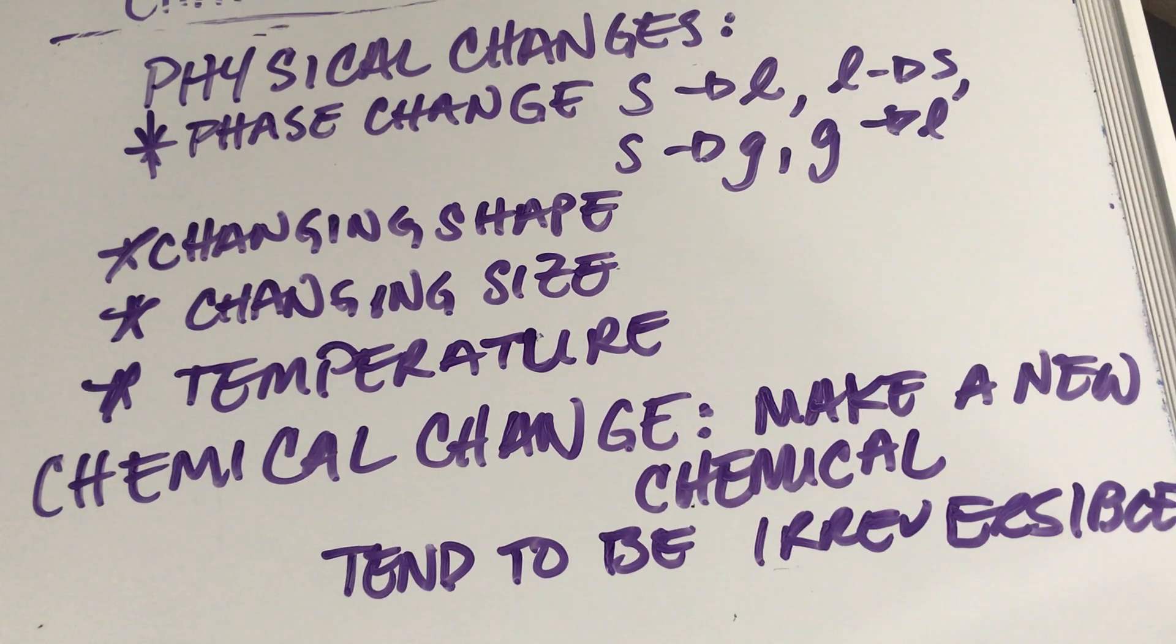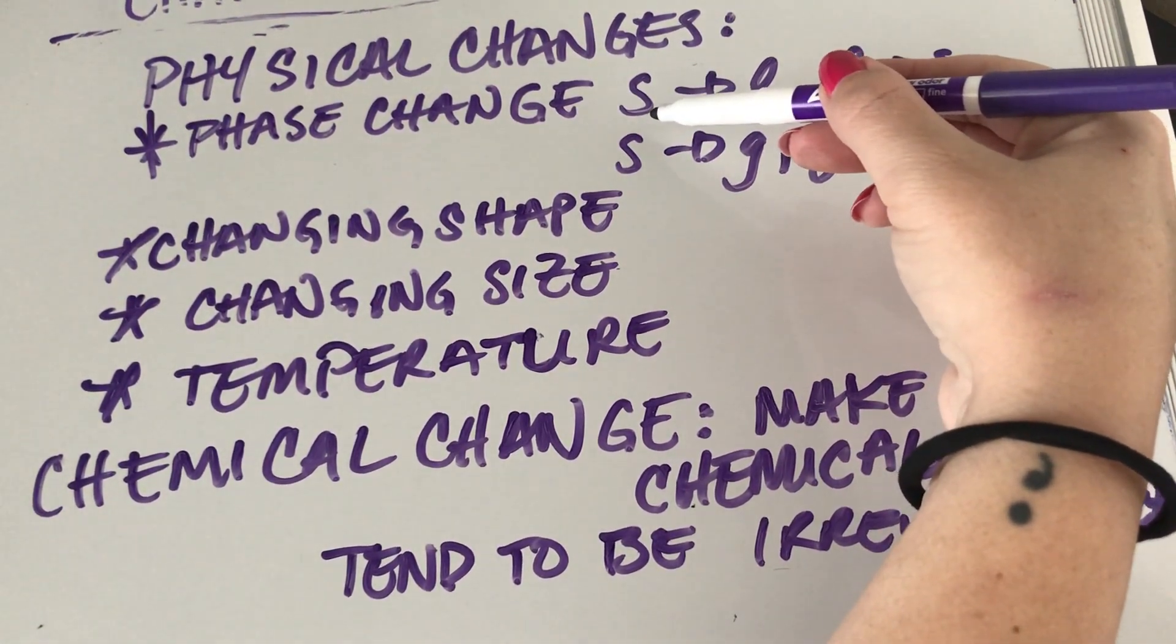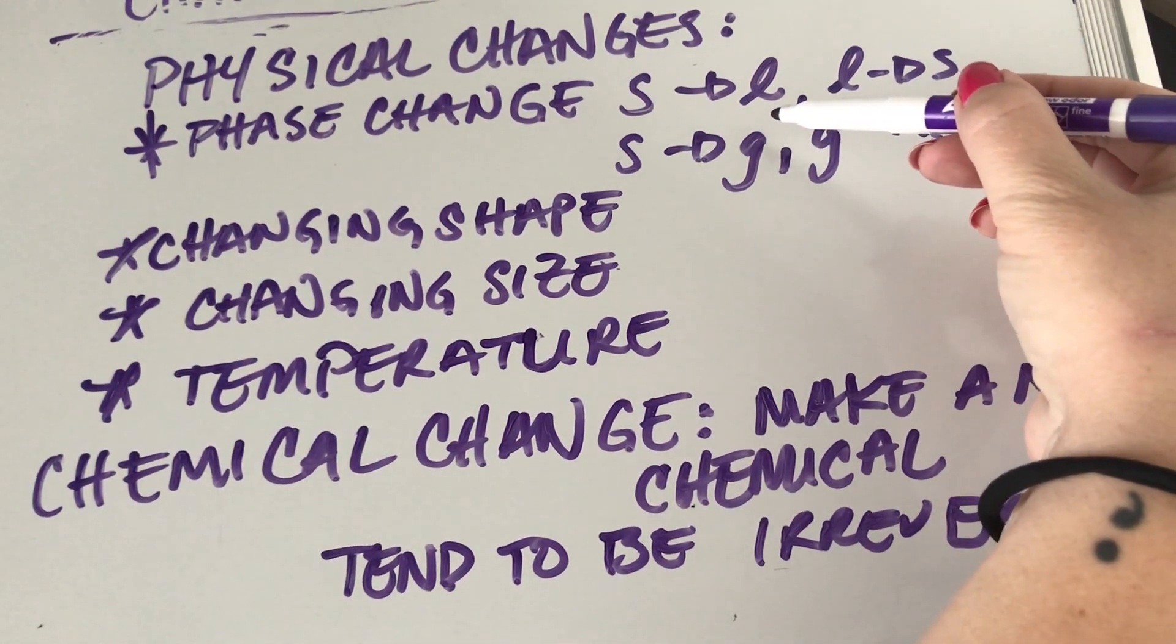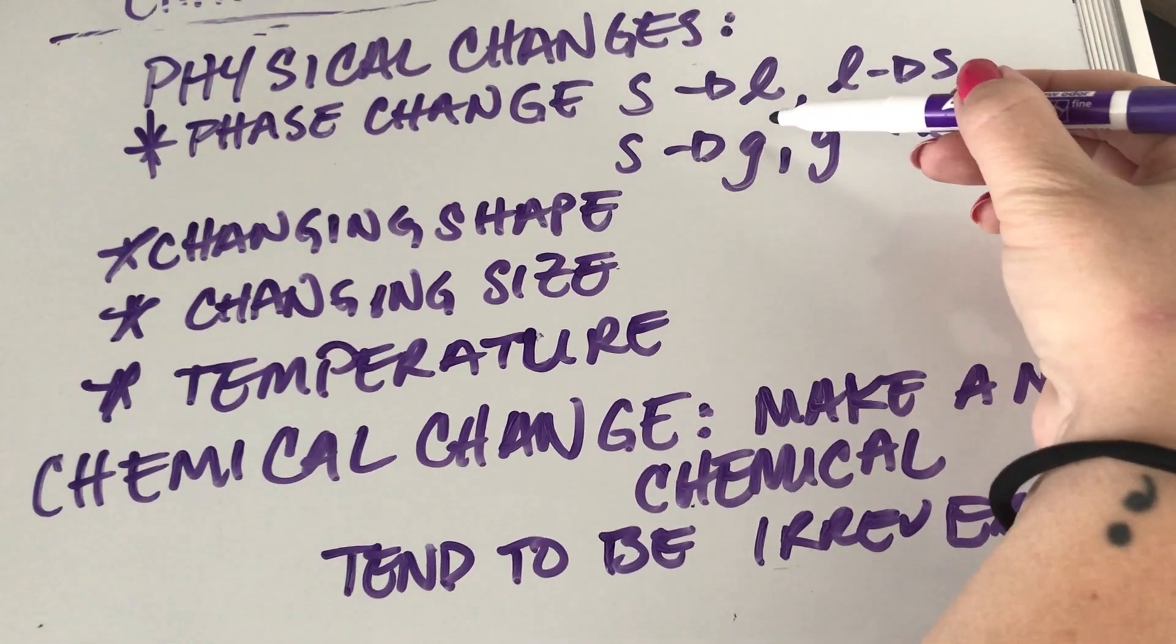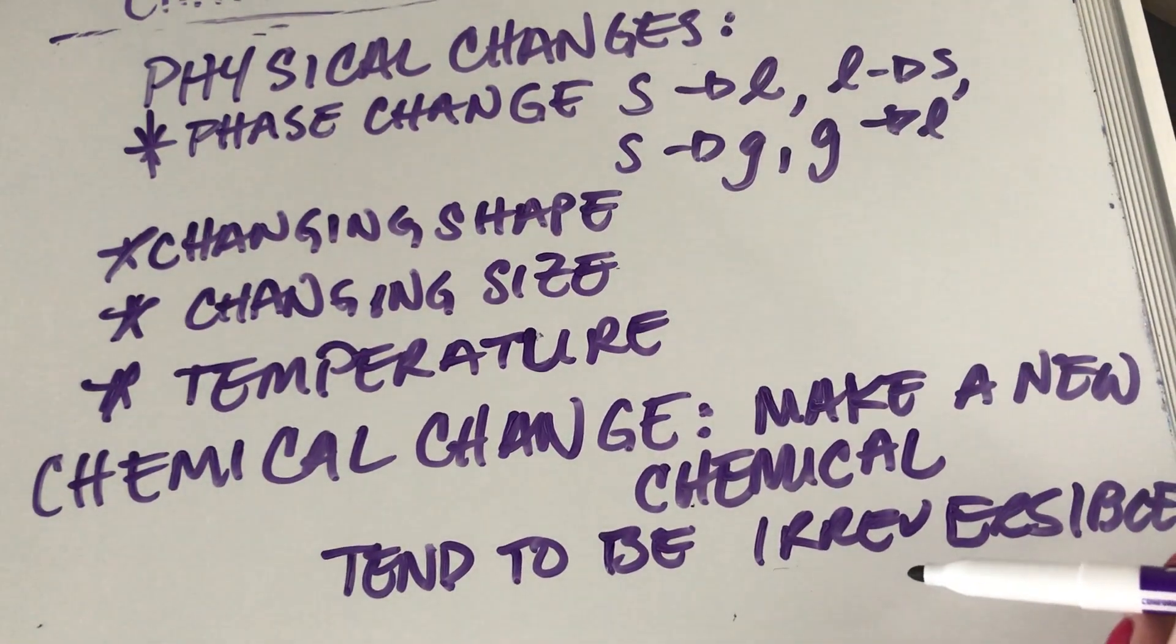So when we burn something, we have chemically altered the substance from what it was to now something new. And that change, that chemical change that's occurred, will also be accompanied by physical changes. There'll be changes in temperature, changes in size, shape, that kind of stuff. This is where it gets confusing for students. You can have a chemical change that has physical changes involved, but unless you actually change the chemical composition, you're not doing a chemical change. For example, going from solid ice to liquid, you haven't changed the substance. It's still water. It's still H2O. Does that make sense?